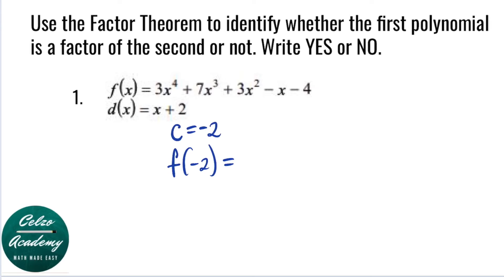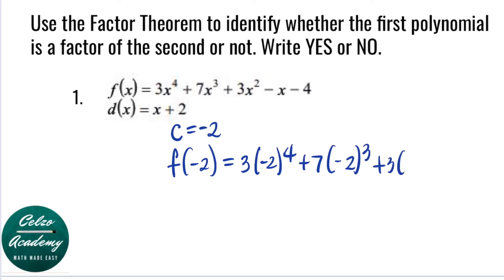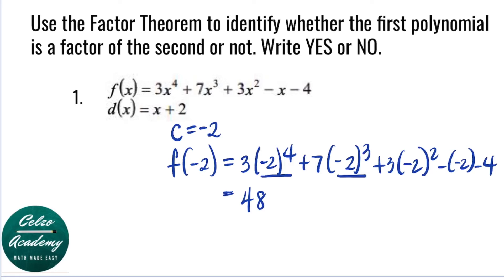So let's substitute negative 2 into f of x. We have 3 times negative 2 to the fourth power, plus 7 times negative 2 to the third, plus 3 times negative 2 squared, minus negative 2, minus 4. Simplifying this: negative 2 to the fourth is 16; 16 times 3, we have 48. Now negative 2 to the third is negative 8; negative 8 times 7 is negative 56. Simplifying negative 2 squared, that's positive 4; positive 4 times 3, we have plus 12.